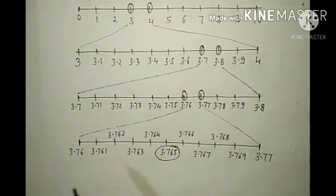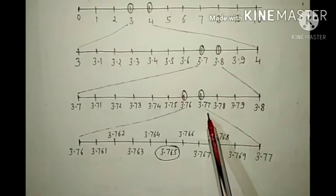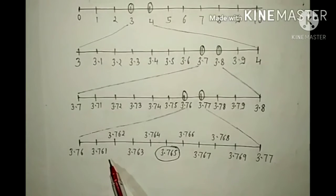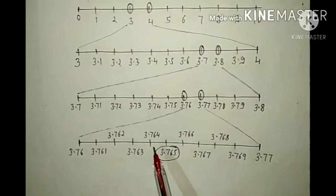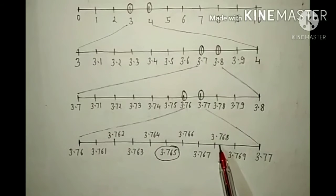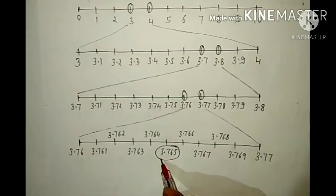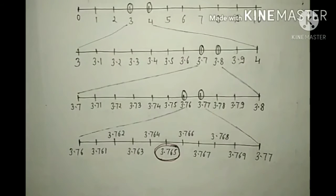So mark these two points 3.76 and 3.77. Now again make one more number line below this. Write 3.76 in the left corner and 3.77 in the right corner. Write numbers between them: 3.761, 3.762, 3.763, 3.764, 3.765, 3.766, 3.767, 3.768, 3.769, then 3.77. We need 3.765, so mark it by making a circle. This is your answer.